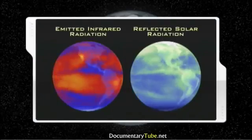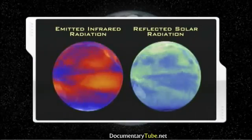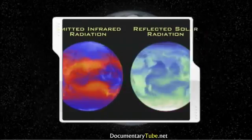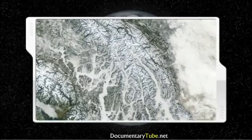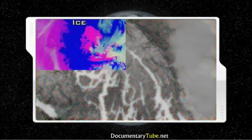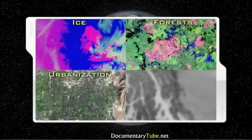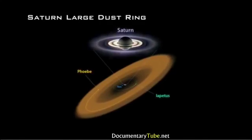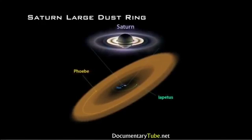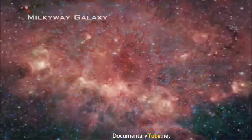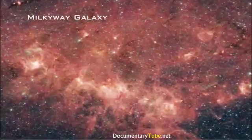Studying the emission and reflection of infrared waves helps us understand the Earth system and its energy budget. Near infrared data can also help scientists study land cover changes such as in snow, ice, forests, urbanization, and agriculture. Scientists are beginning to unlock the mysteries of cooler objects across the universe — such as planets, cool stars, and nebulae — using infrared waves.